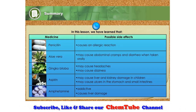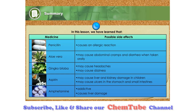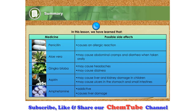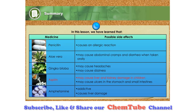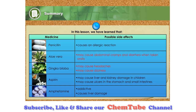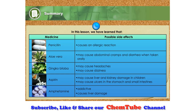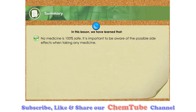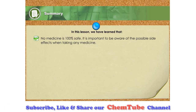The table shows the possible side effects of modern and traditional medicines. Some of the side effects are serious and may be fatal, such as the allergic reaction to penicillin and liver and kidney damage in children when given aspirin. Amphetamines and most psychotherapeutic drugs are addictive. Other possible side effects like drowsiness, headaches, and abdominal cramps are less serious. No medicine is 100% safe, and it is important to be aware of possible side effects when taking any medicine.